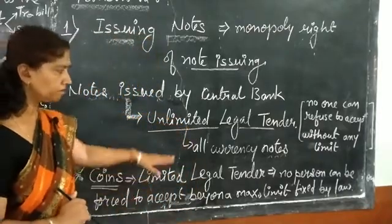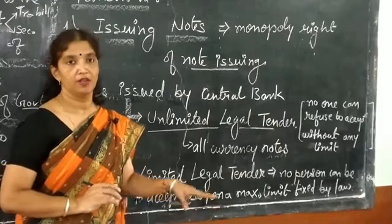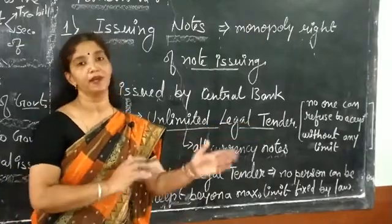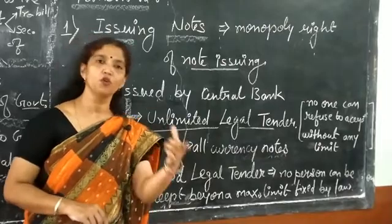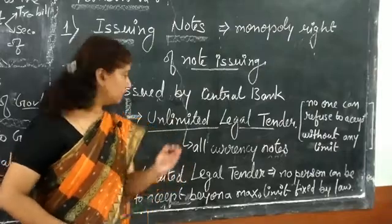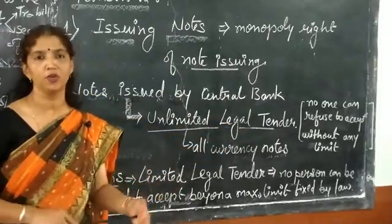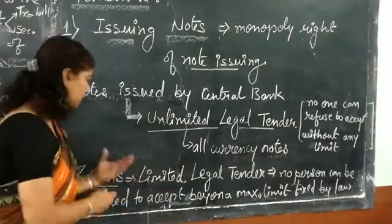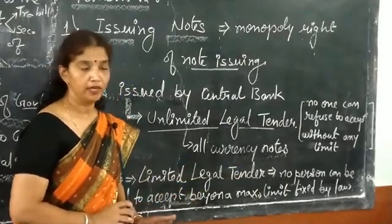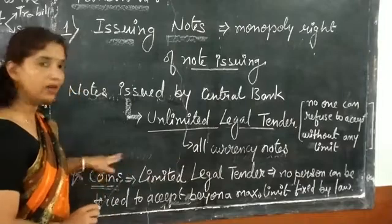Limited legal tender is quite different. No person can be forced to accept this legal money beyond the maximum limit fixed by law. For example, if a loan of 1 lakh or 1 crore rupees is paid using 1 rupee coins, that falls under limited legal tender. All kinds of coins — 1 rupee, 2 rupee, 5 rupee, 10 rupee — are known as limited legal tender in our country.